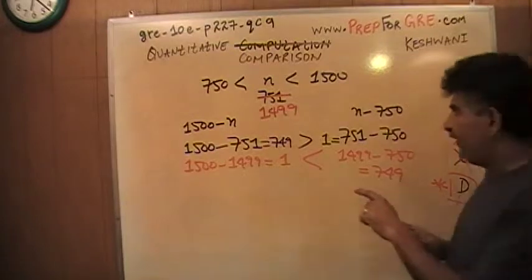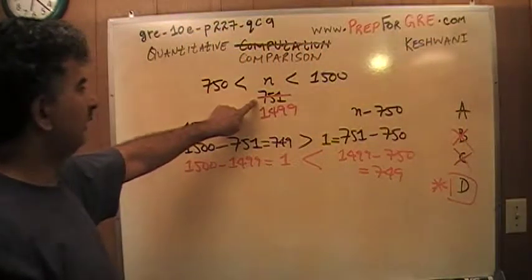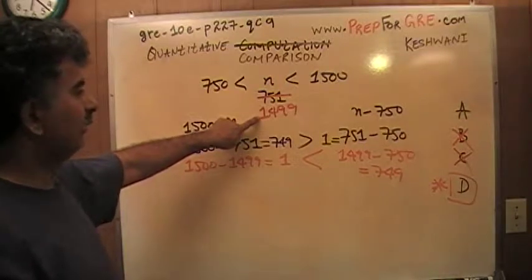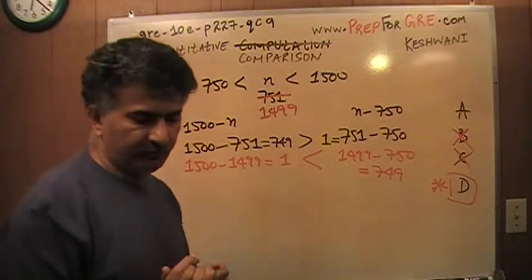Alright, so we have looked at two possible values of N. We took one extreme case where N was 751 and we took another extreme case of N equal to 1499 because N has to be between 750 and 1500. We looked at two possible values of N.